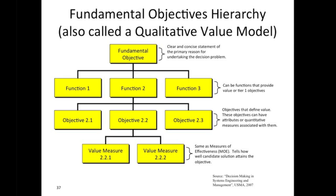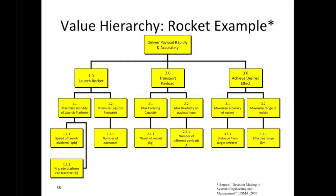You continue decomposing the higher-level objectives and functions into sub-objectives that define value, and you keep doing this until you reach the level of attributes or measures. Keeney refers to alternatives while Parnell refers to candidate solutions — they're both basically the same thing. Here's a simple example of a fundamental objectives hierarchy taken from Parnell's text, Decision Making in Systems Engineering.